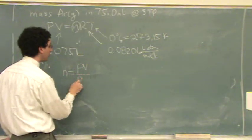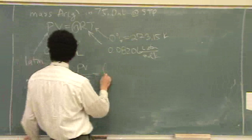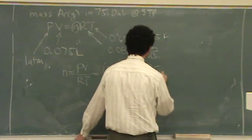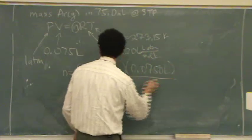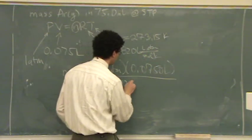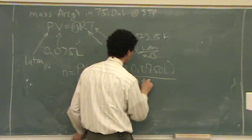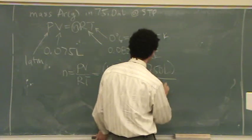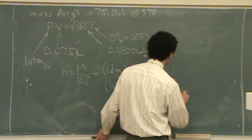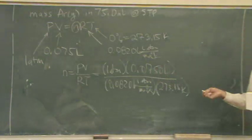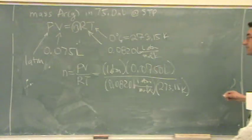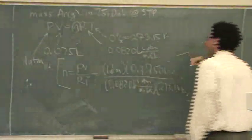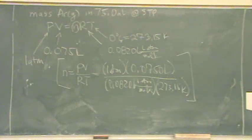So it's PV over RT. P, one atmosphere, the volume 0.0750 liters, R 0.08206 liters atmospheres per mole kelvin, times T, 273.15 kelvin. And then after you get this number, whatever that is, you're going to take this and multiply by the molar mass to get grams.